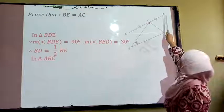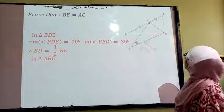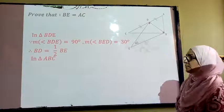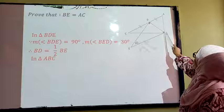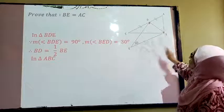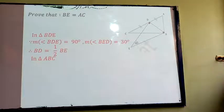In the second triangle, which is ABC, BD also is a median. This is a median. And the median which comes from the vertex of the right angle triangle equals half AC. So, BD equals half AC.